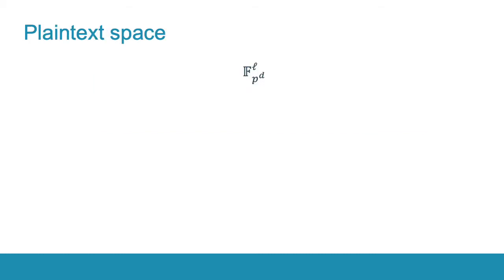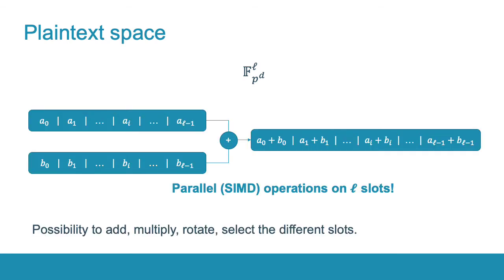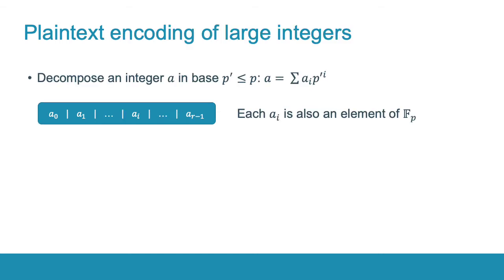The plaintext space in such schemes is typically a vector space over a finite field. Plus, there are homomorphic operations that allow to add and multiply plaintext vectors coefficient-wise and also rotate them or select a certain coordinate and zeroize the rest. To compare integers homomorphically we need first to encode them into the plaintext space. First, we decompose a given integer A into its base p representation. Every digit of this decomposition is also an element of the prime finite field Fp.